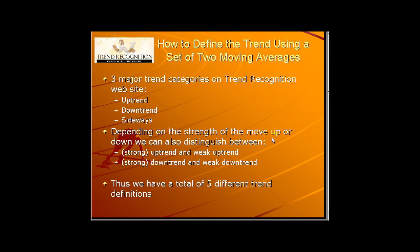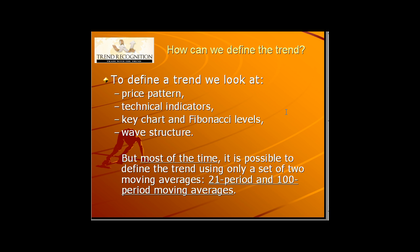So how can one define which type of trend the market is in? To define the trend you can look at price pattern, which is usually the most important indicator, some technical indicators, key chart and Fibonacci levels, and also the wave structure. But most of the time — actually 90% of the time — it is possible to define the trend correctly using only a set of two moving averages. I use the 21-period and the 100-period moving averages.